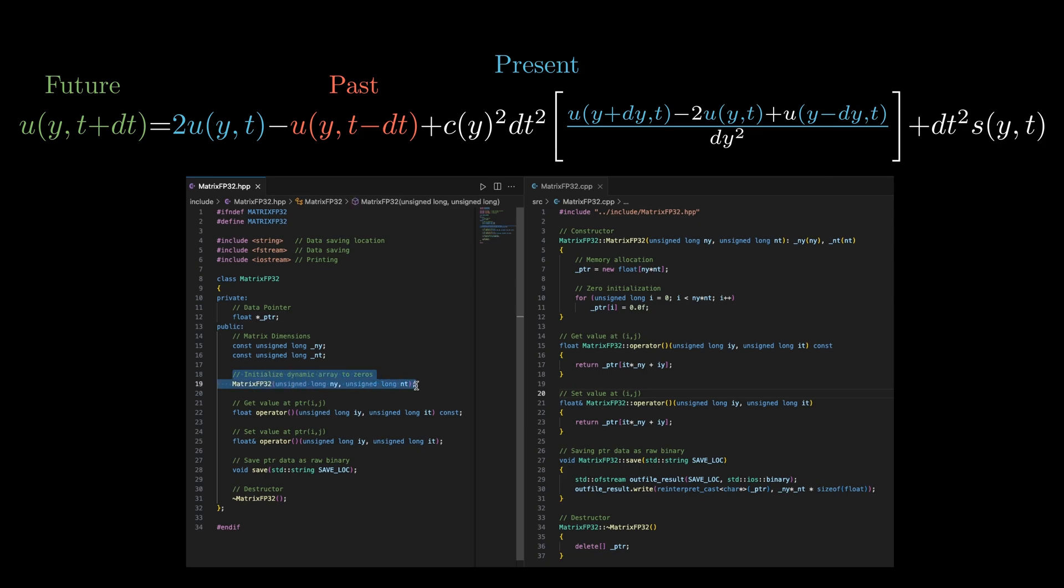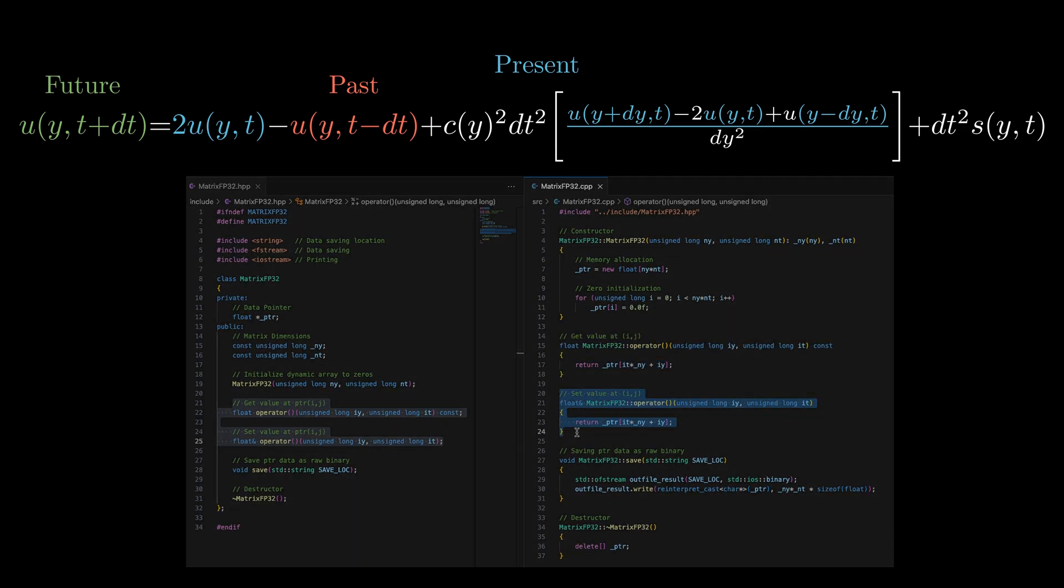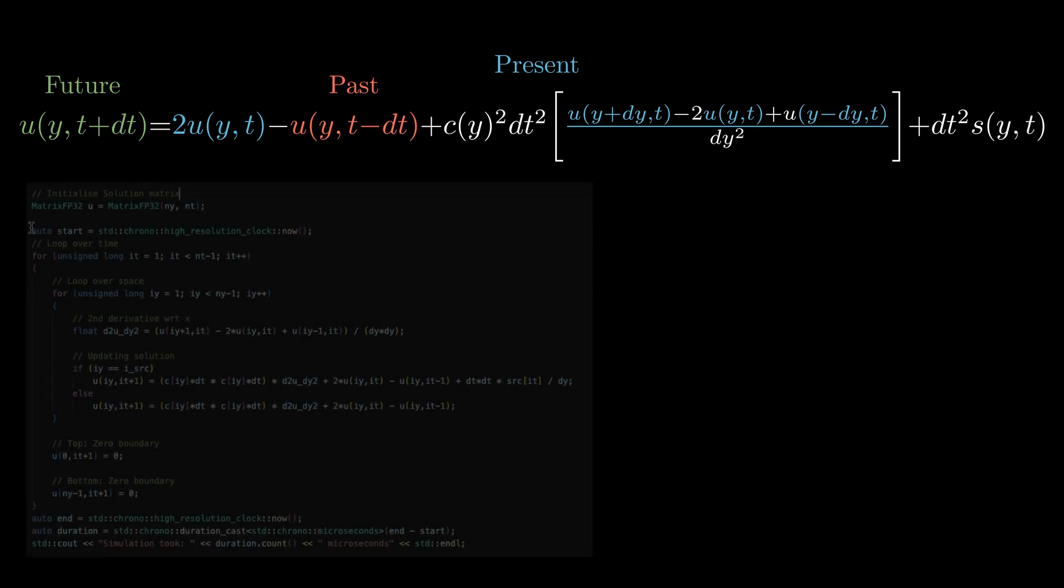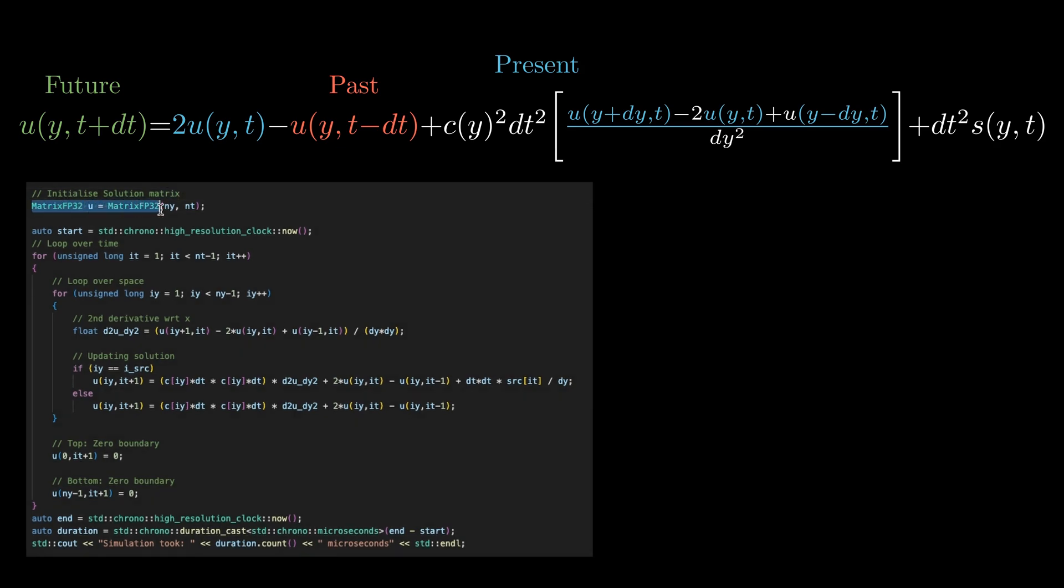On top of the constructor, which can be used to easily allocate the dynamic array and initialize everything to zero, there are two main methods in this class. One to get the value and another to set the value at a specific location. This made the code base more readable. In a single line of code, u can be initialized with zeros.